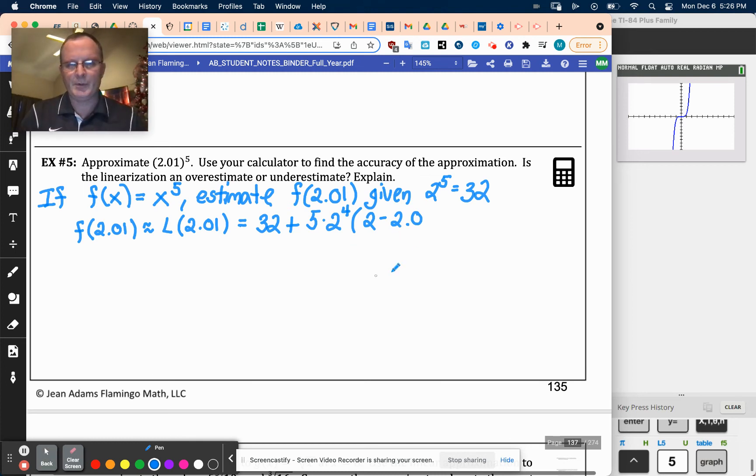And that is backwards. Let's get an eraser here. I need the 2.01 to be right there. So 2.01 minus 2.